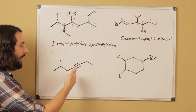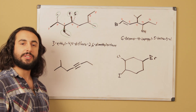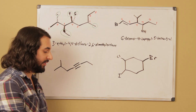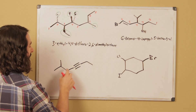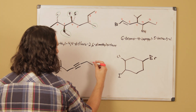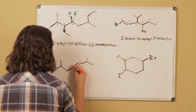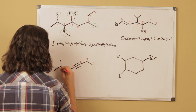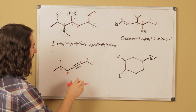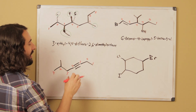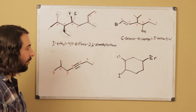For the alkyne, we number the parent chain so as to have the triple bond occurring soonest. Going right to left will place it sooner, so we number: one, two, three, four, five, six, seven. We should also realize that in line notation, carbons participating in triple bonds are sp hybridized, which gives them linear molecular geometry — that's why we draw them linearly.